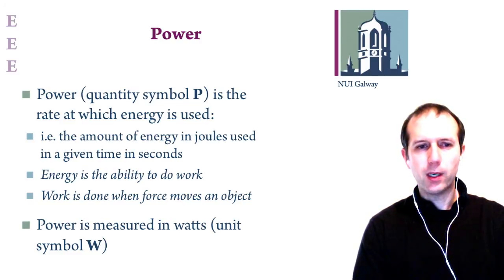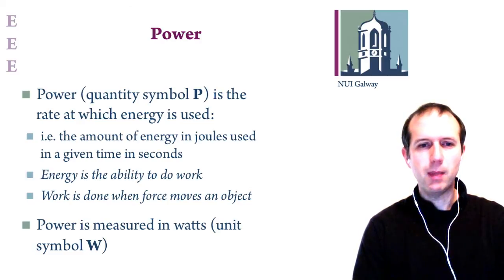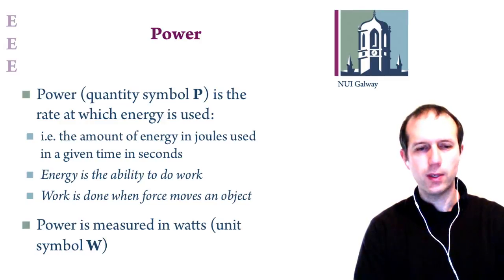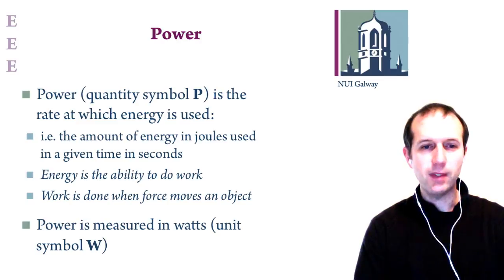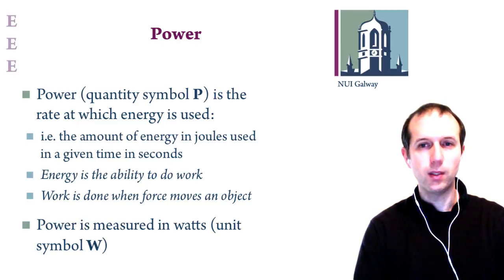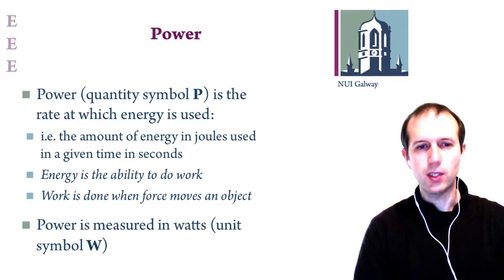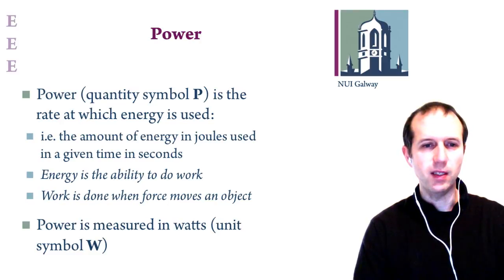If we think of power in terms of how much energy is used in a given time, we need to think about what energy is. Energy is basically the ability to do work. Work is usually done when a force moves an object from one place to another — for example, pushing a table across a room. Energy is having the capability to do that work, and power is an expression of how much energy is used in a given amount of time.